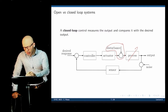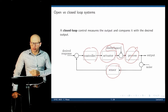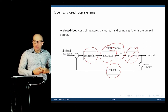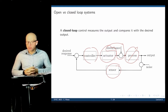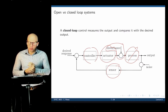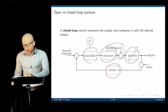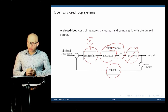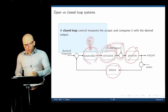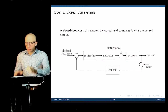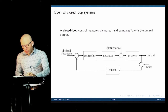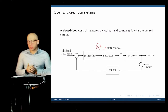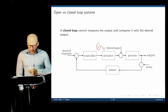Each of these blocks can be represented by a transfer function: one for the process, one for the actuator, one for the sensor, and the controller is a transfer function we define as designers. A very rudimentary controller could simply use a gain K, where the output of the actuator is proportional to the error between the desired and actual output. In the case of the insulin pump, the voltage applied to the actuator would be proportional to the error between the current and desired glucose response.